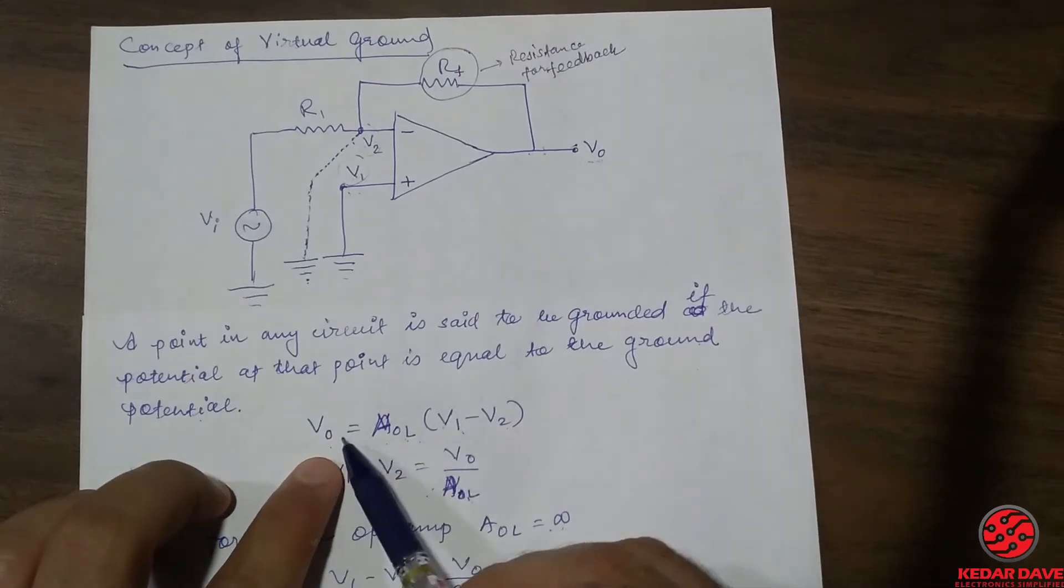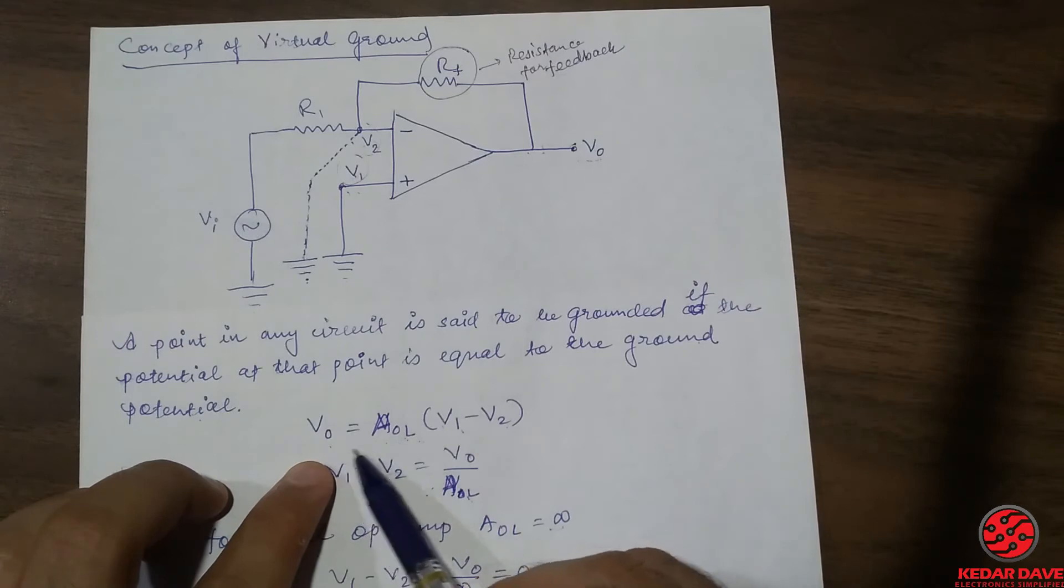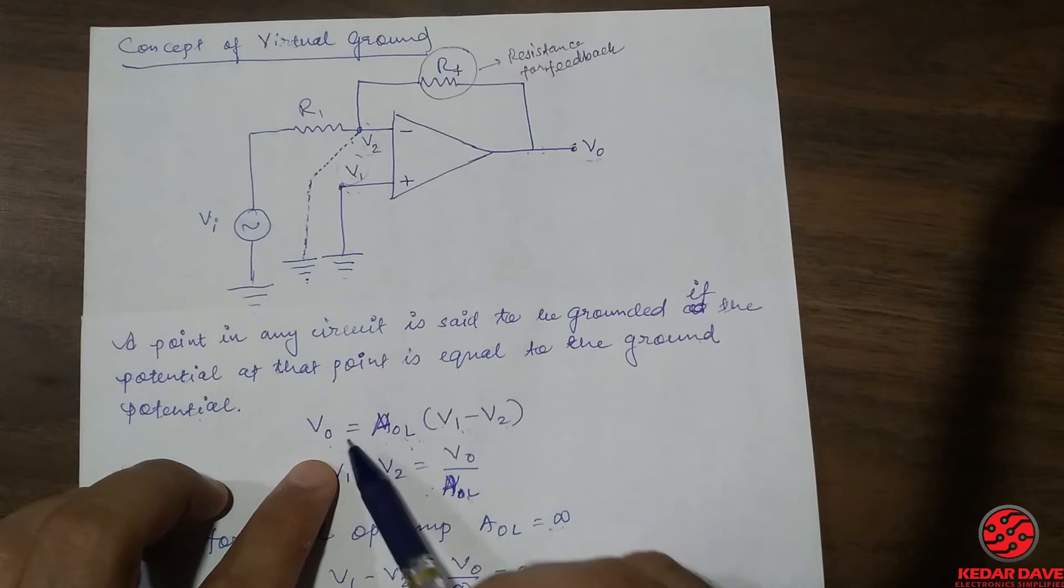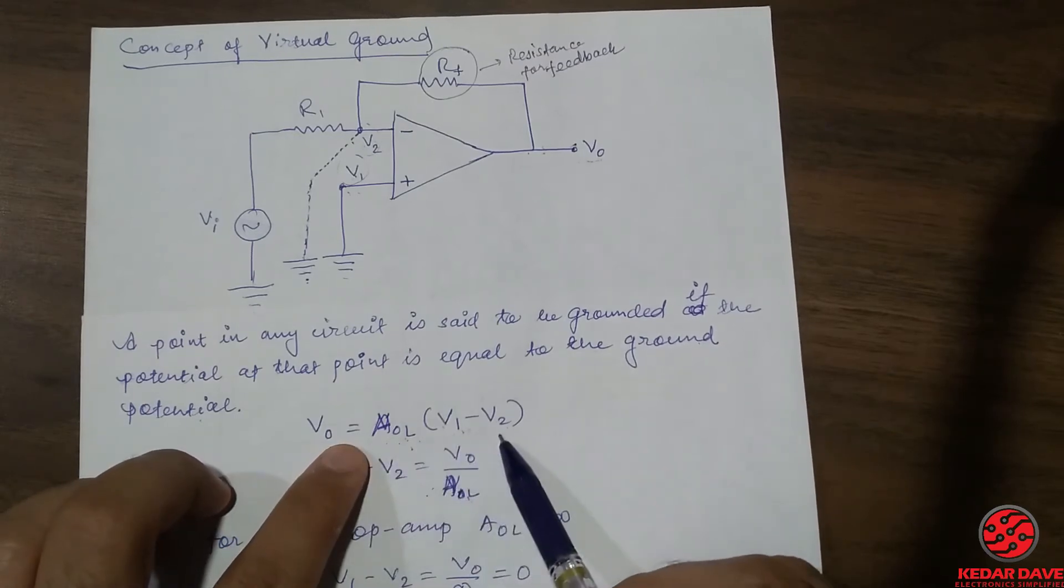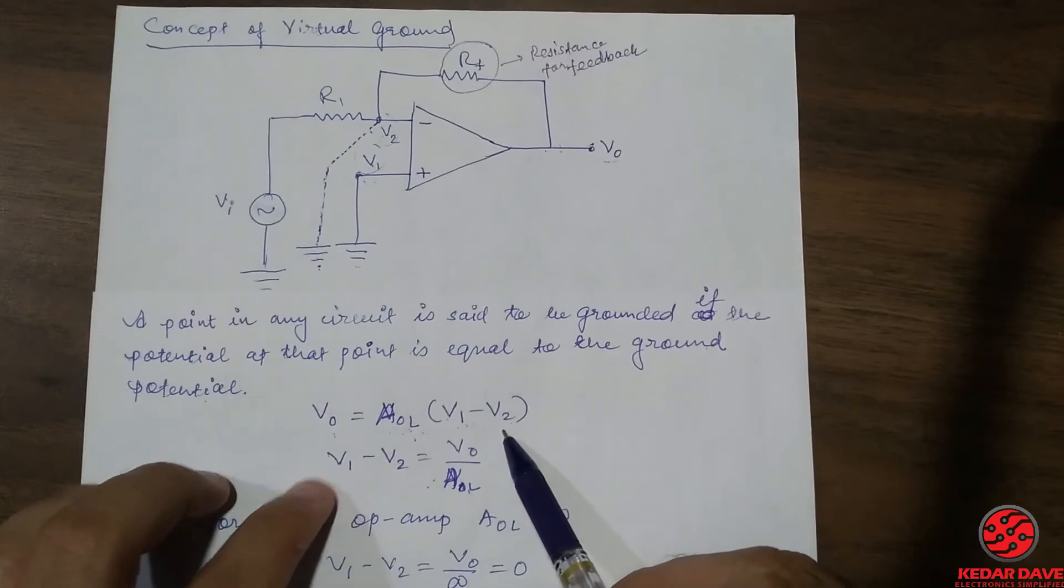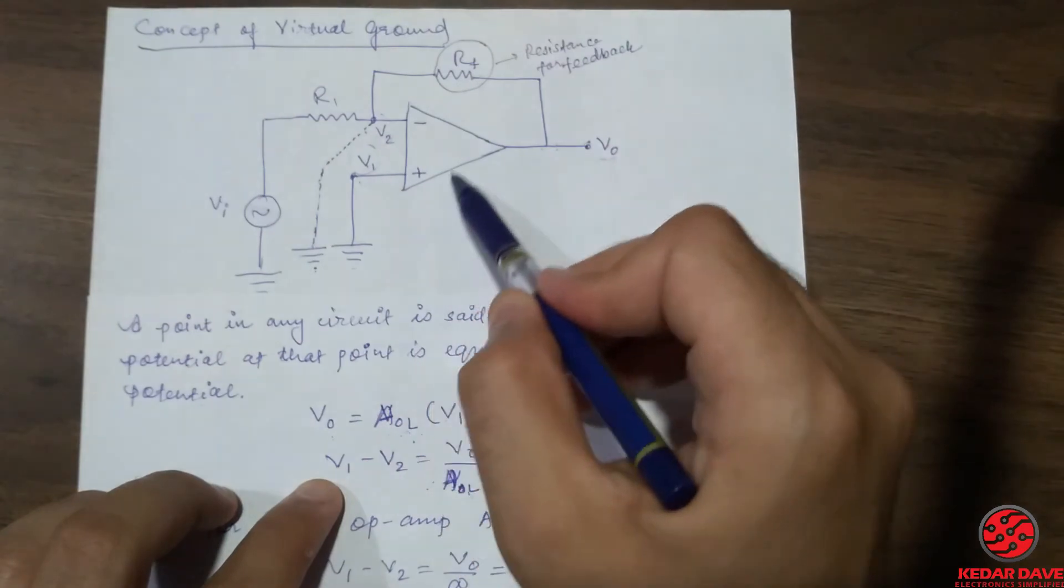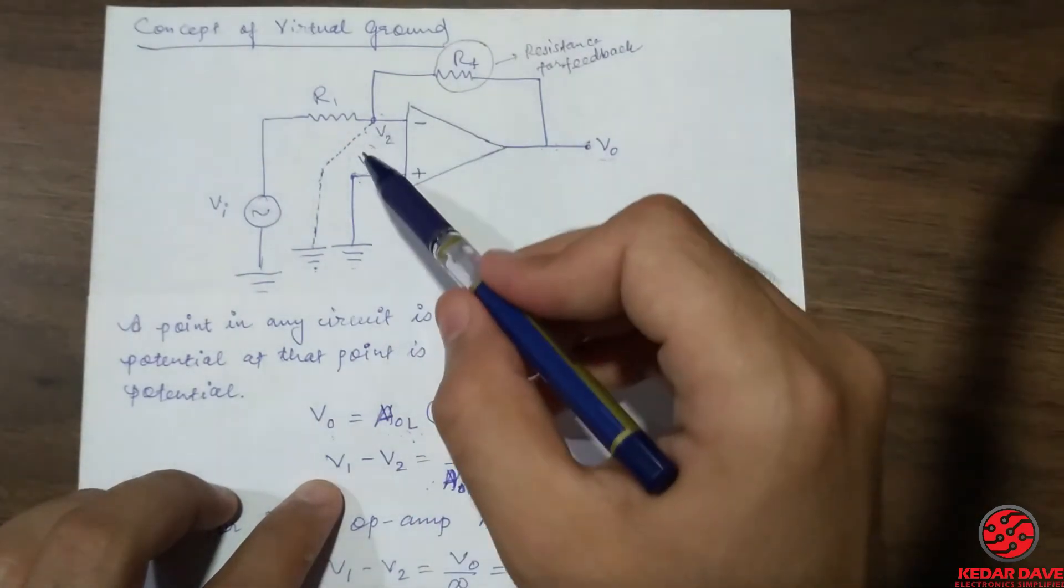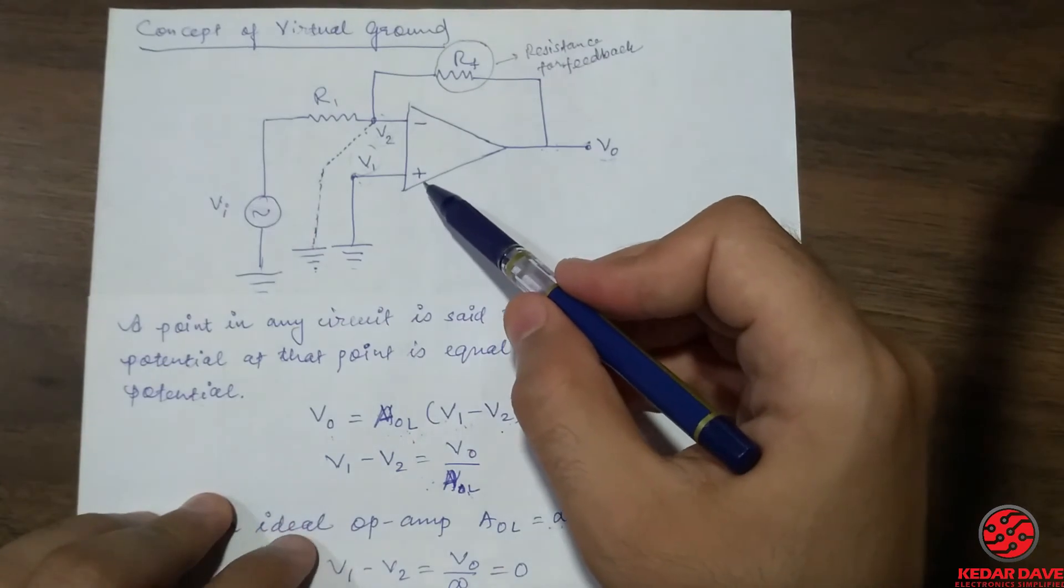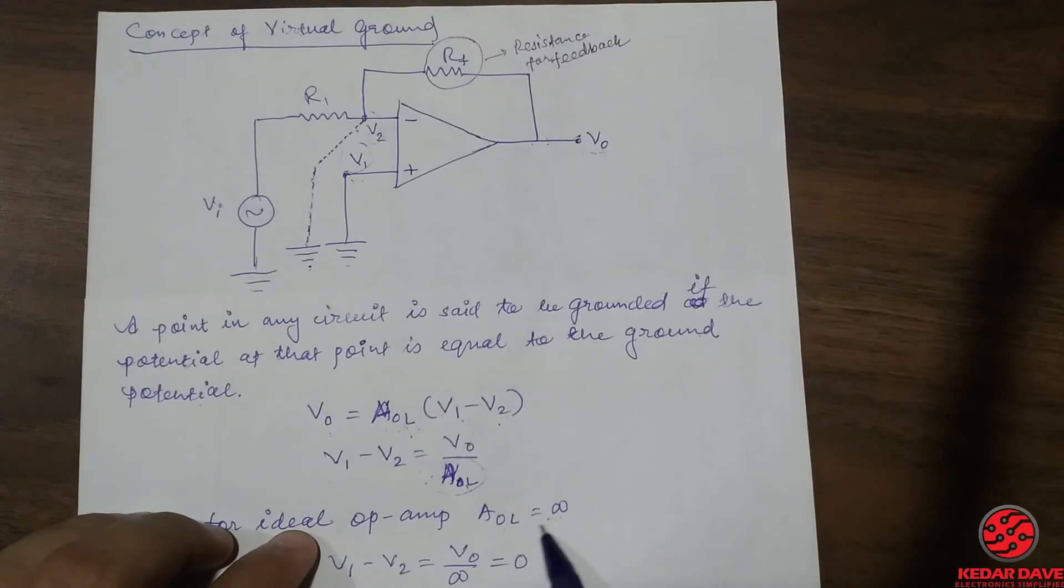So here you can see that we are applying some basic formulas that we have already studied in the operational amplifier introduction, that is VO equals to open loop gain multiplied by V1 minus V2. So in this condition we are assuming the operational amplifier as an ideal one, and if we assume this operational amplifier as ideal, we are putting the AOL as an infinite value.